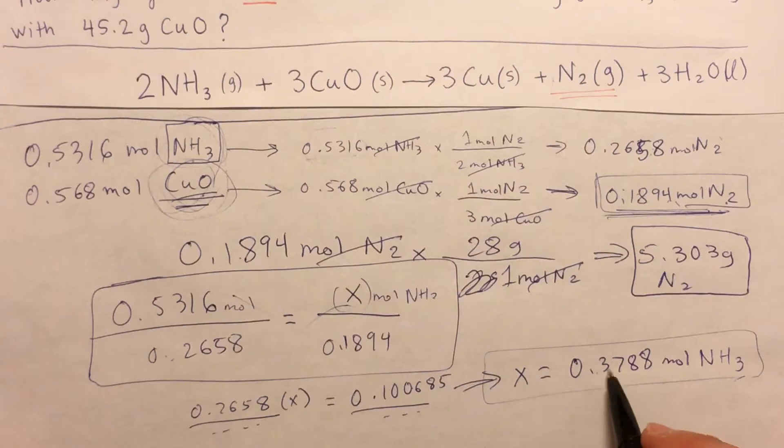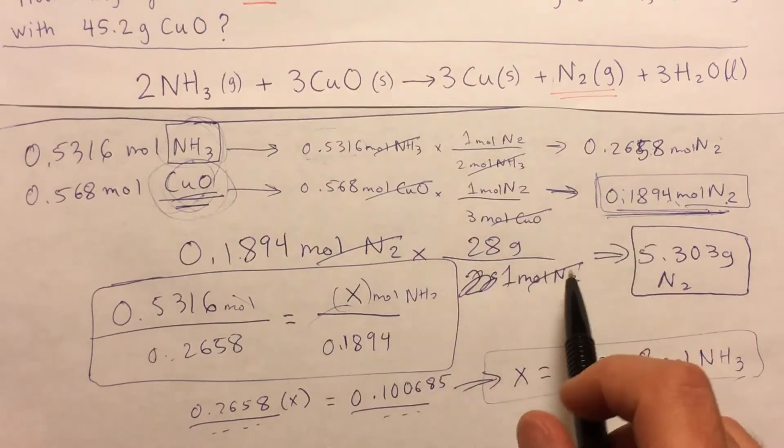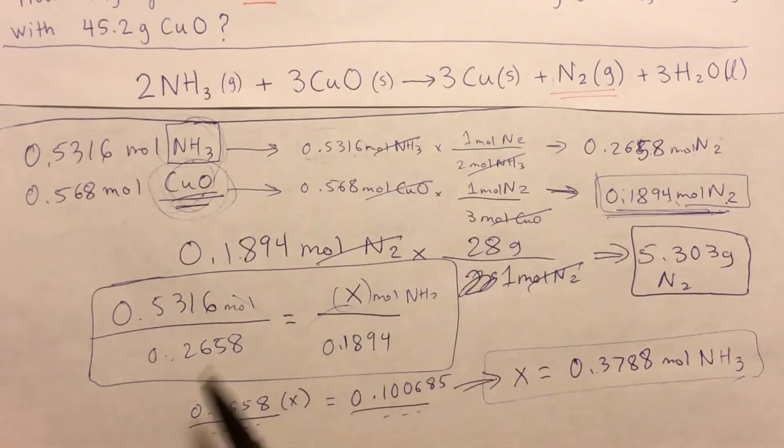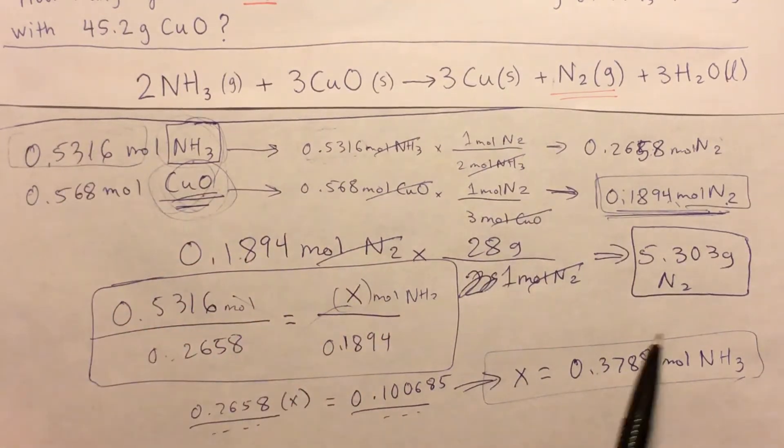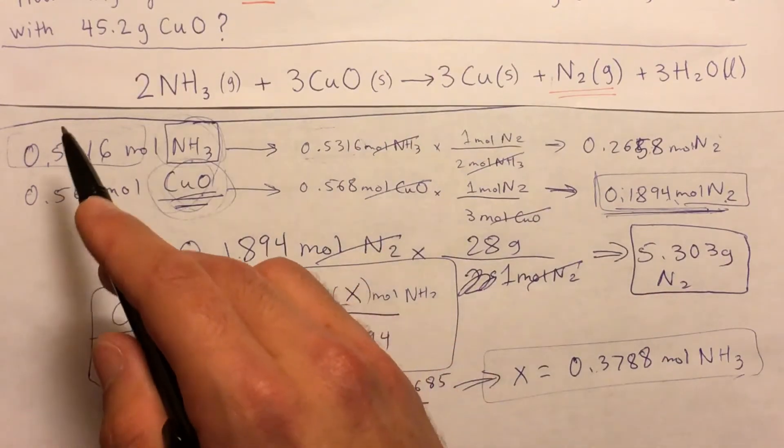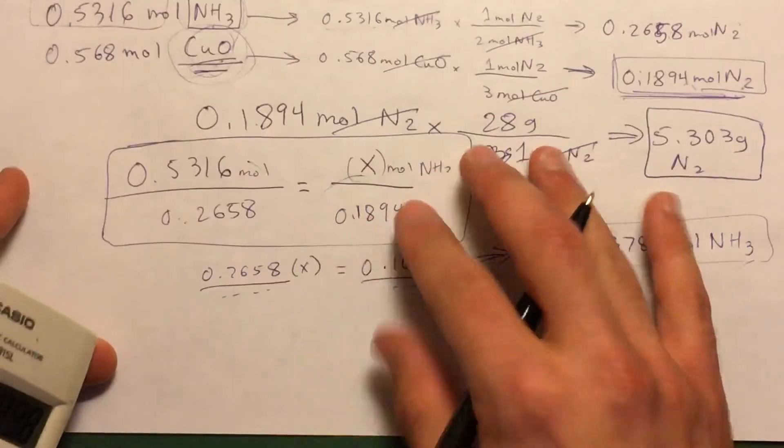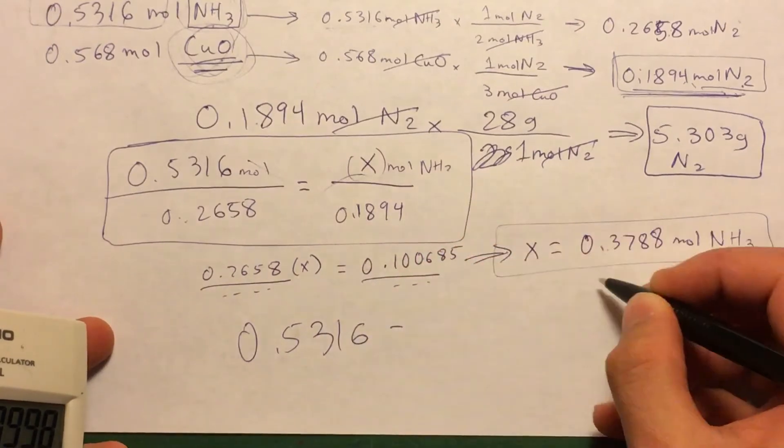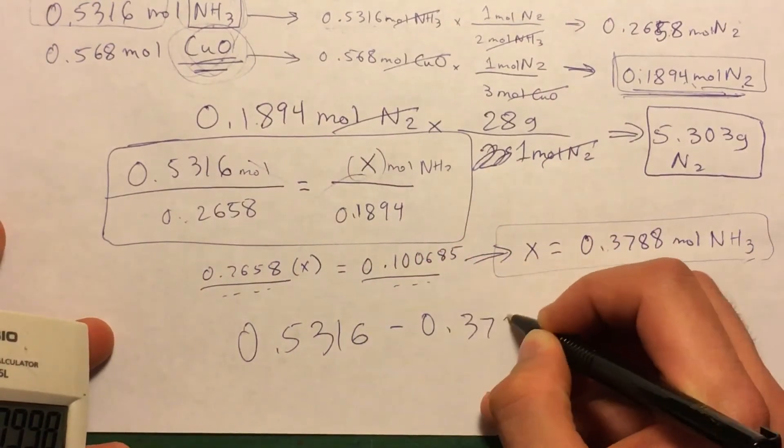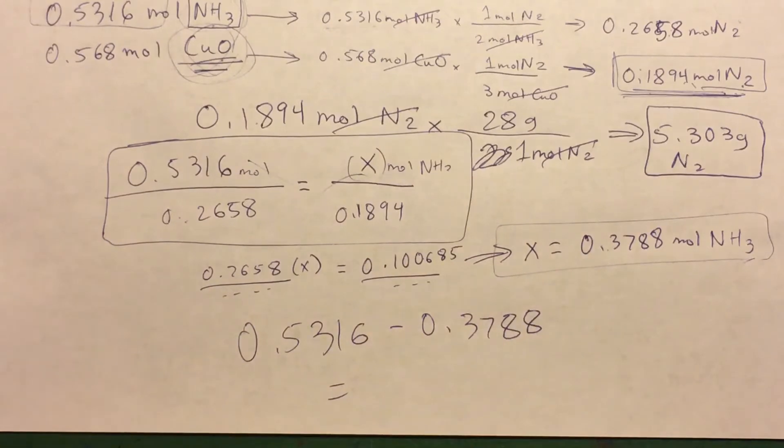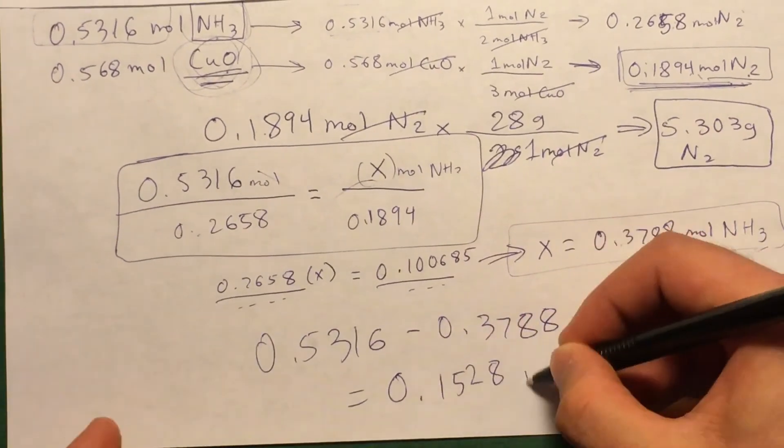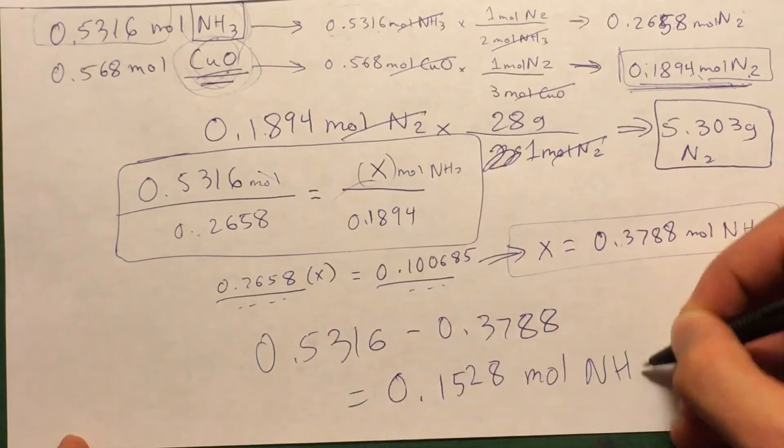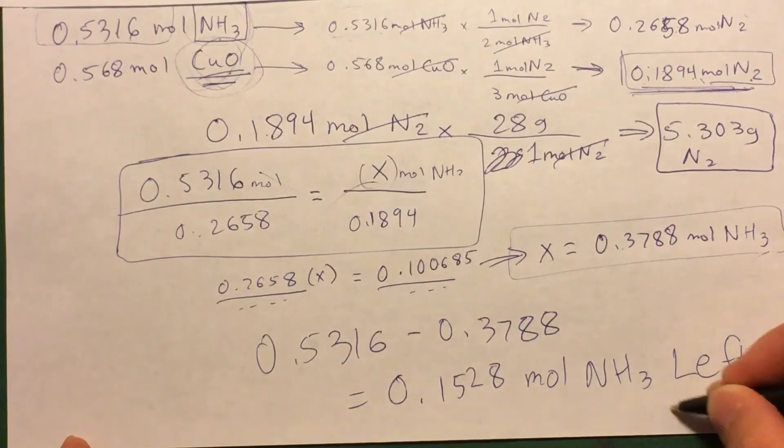So that means we only needed this amount of moles of NH3 to complete this reaction, but we were given 0.5316, so what's left over? What we were given minus what we used, so you subtract 0.5316 by this number, 0.3788, and that would leave you with 0.1528 moles of NH3 left over.